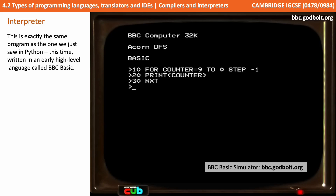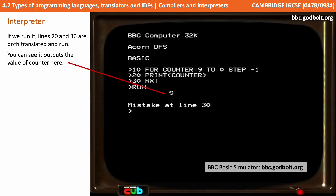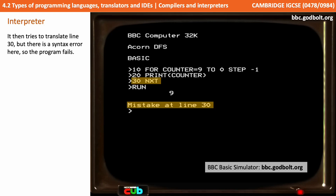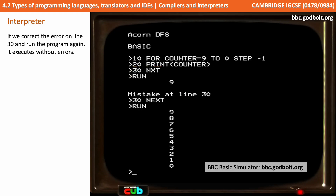Now we're going to look at interpretation. This is exactly the same program as the one we just saw in Python, but this time it's written in an early high-level language called BBC Basic. You can try this BBC Basic simulator yourself using the web address shown on screen. If we run it, lines 20 and 30 are both being translated and run — you can see it outputs the value of the counter. It then tries to translate line 30, but there's a syntax error, so the program fails at that point. If we correct the error on line 30 and run the program again, it executes without errors.